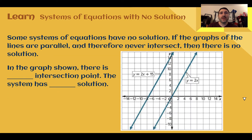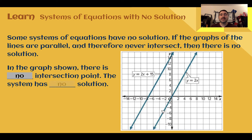Systems of equations with no solution. Some systems of equations have no solution. If the graphs of the two lines are parallel — meaning they never intersect — then there is no solution, since the solution is where they intersect. If two lines have the same slope but different y-intercepts, they will be parallel and have no solution. Since the rate of change stays the same, the lines always remain the same distance apart.